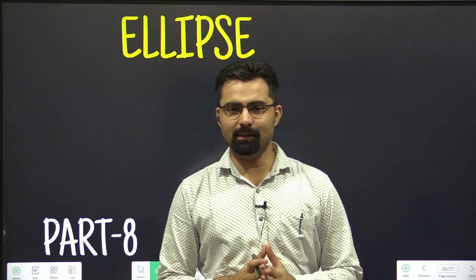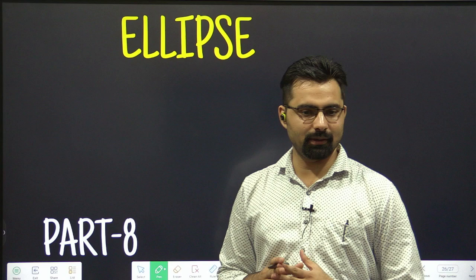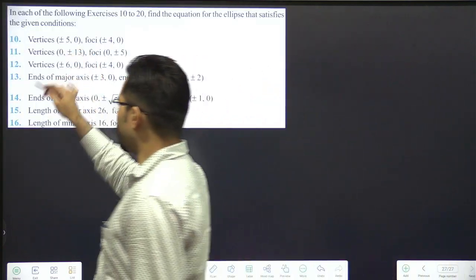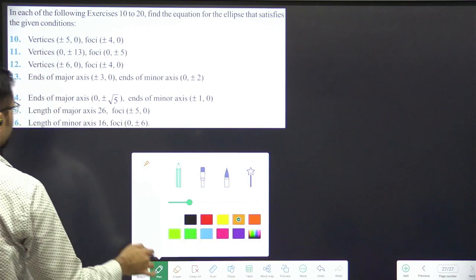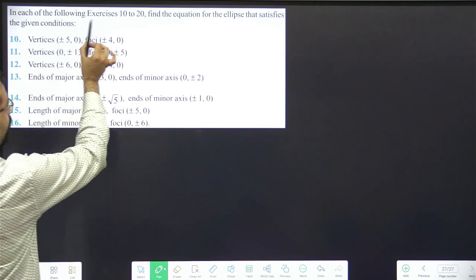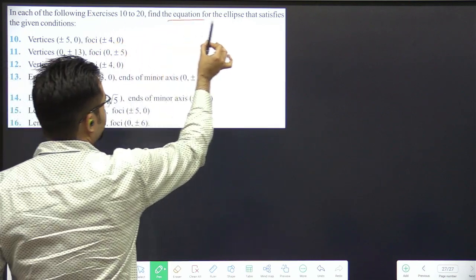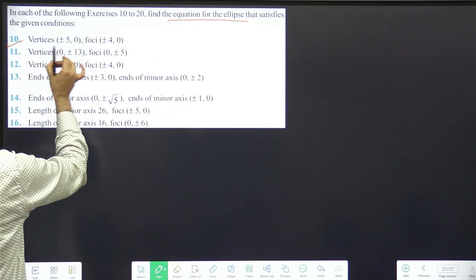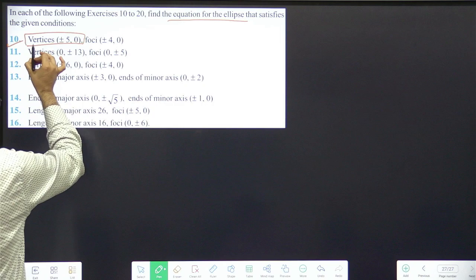Let's continue with ellipse. We have read all the properties and formulas in the last time. Now we have question number 10, 14, and 16. Question 10: For each of the following, find the equation for the ellipse. We have vertices.